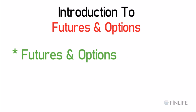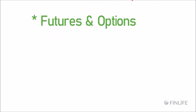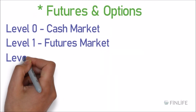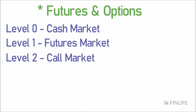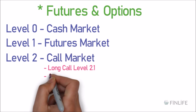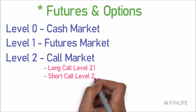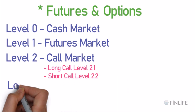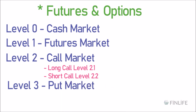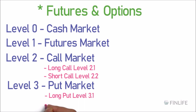We have divided the course into four parts: Level 0 which is the cash markets, Level 1 which is the futures market, Level 2 which is the call market further divided into Level 2.1 (long call) and Level 2.2 (short call), and Level 3 which is puts, divided into Level 3.1 (long put) and Level 3.2 (short put).